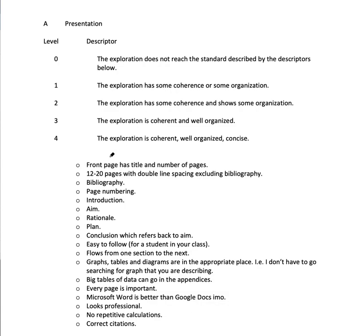The front page has a title and number of pages. It's 12 to 20 pages — as a guide, it can be 11, 10, 21, or 22 provided it fits all the necessary requirements of the criteria. But 12 to 20 pages, double line spacing, excluding the bibliography. It has a bibliography — if you have cited anywhere, ensure you include that in the bibliography. Page numbering: just number the pages.